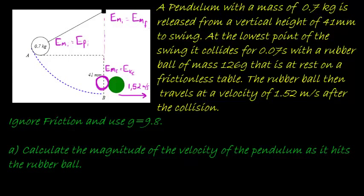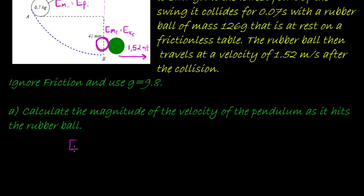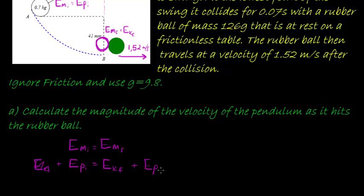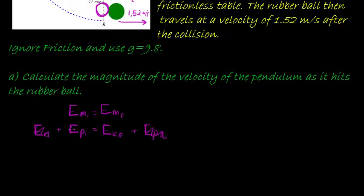So we have: initial mechanical energy equals final mechanical energy. The initial mechanical energy equals the initial potential energy, and the final mechanical energy equals the final kinetic energy — because initial kinetic energy is zero, and final potential energy is zero. The potential energy is mass times gravity times height, and on the right hand side we have half mass times velocity squared.